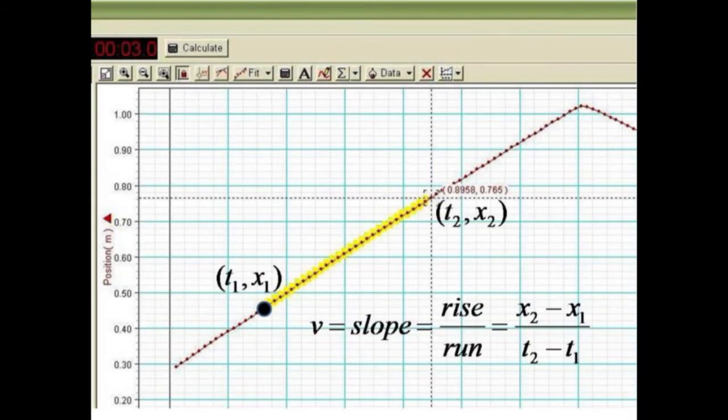From these two points, we can determine an approximation for the velocity by dividing the difference in position by the difference in time. All of the analysis carried out on the cart retreating from the motion sensor may be repeated for the negatively sloped approaching cart with negative velocity.